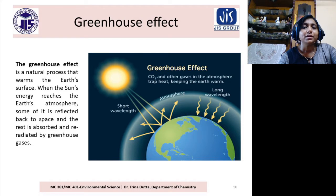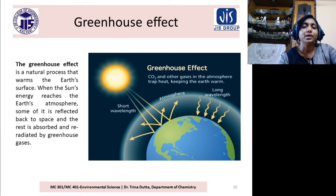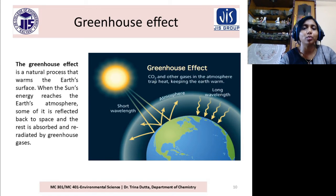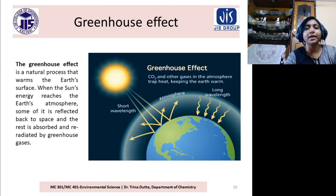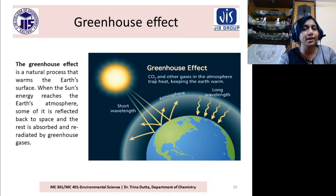These gases can absorb the radiation coming from the sunlight, so the sunlight remains trapped in this blanket. You have to think of solar radiation in two parts: one part is incoming solar radiation, and another part is outgoing Earth radiation. The incoming solar radiation is of shorter wavelength.